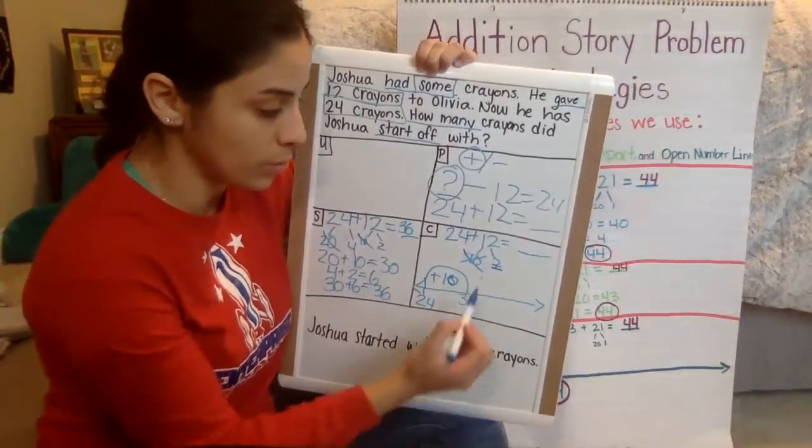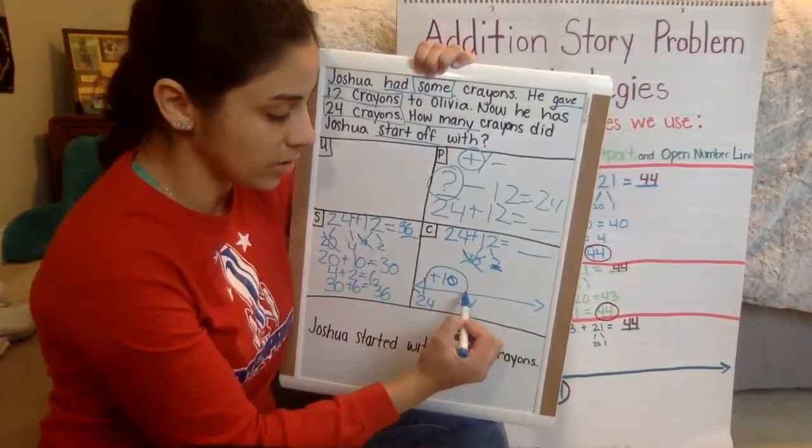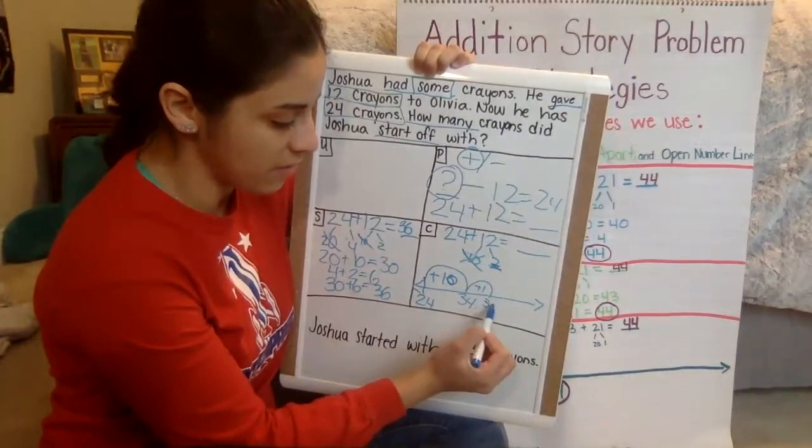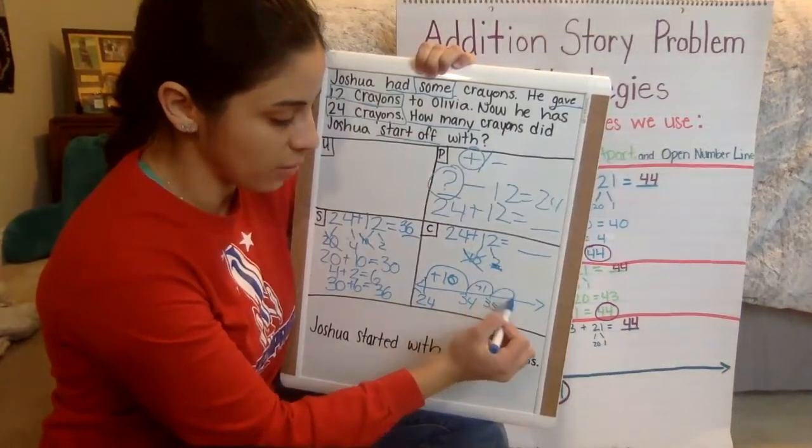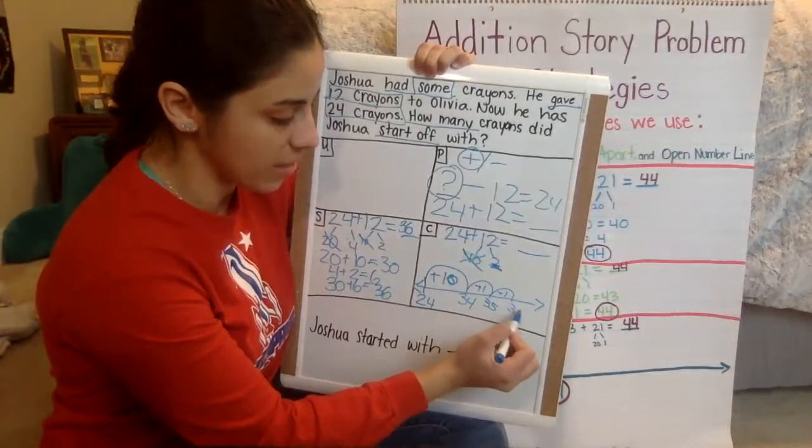Now for this one, there are two ones. So we're going to do plus one, which is 35. And we have to add the other one, which would make it 36.